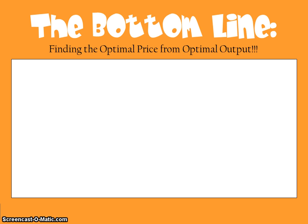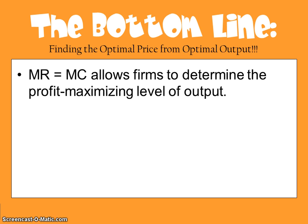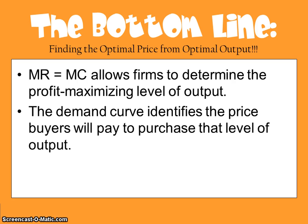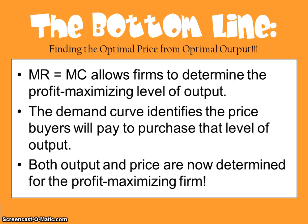The bottom line is that marginal revenue equals marginal cost allows firms to determine the profit-maximizing level of output. The demand curve then identifies the price buyers will pay to purchase that level of output, and both output and price are now determined for the profit-maximizing firm. The firm determines the profit-maximizing quantity and references the demand curve to find the price they can charge.